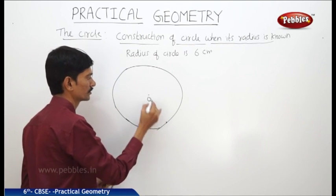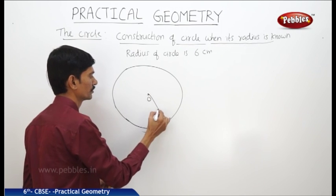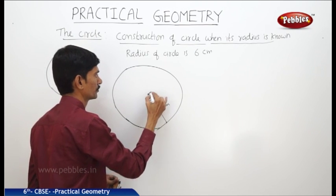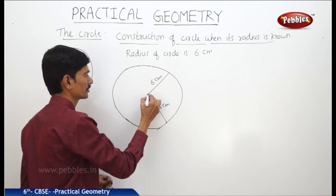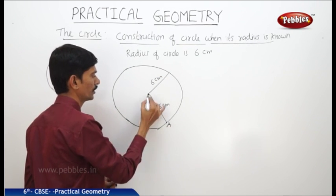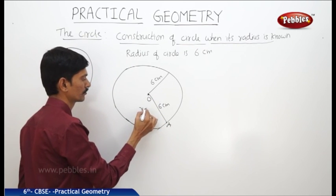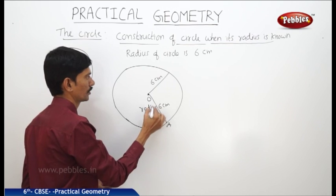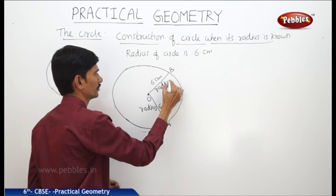If you take any point on the circle, that is 6 centimeters away from the center. This is the center of the circle, O. OA is the radius and OB is also the radius of the circle.